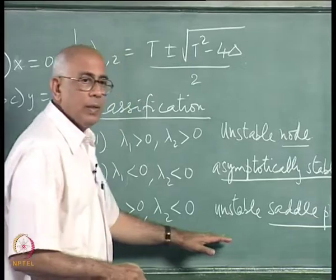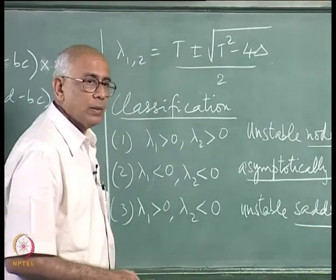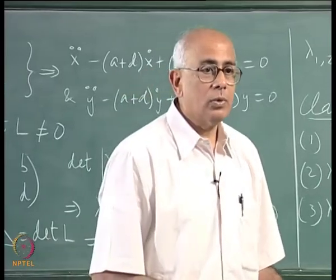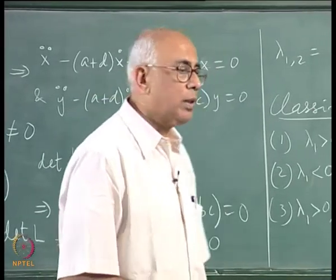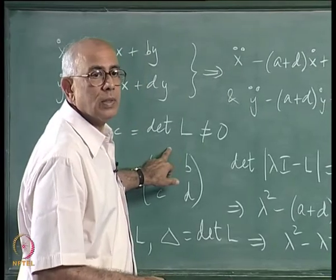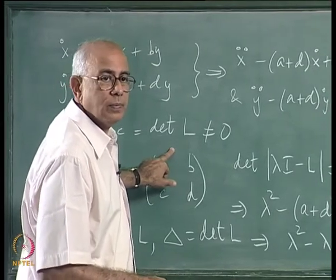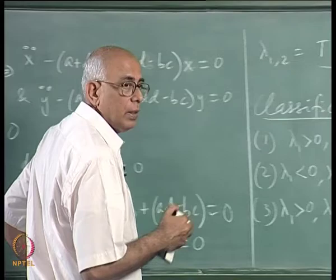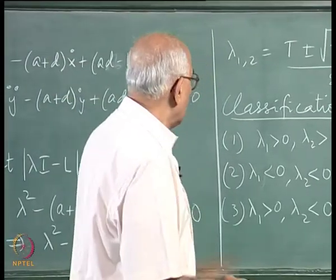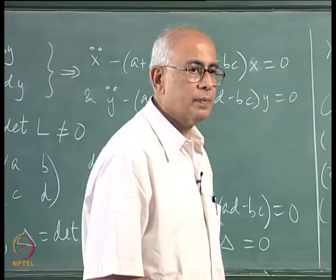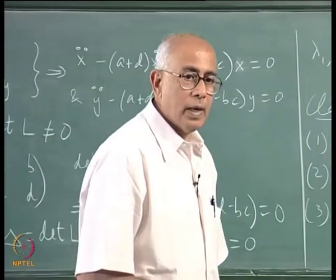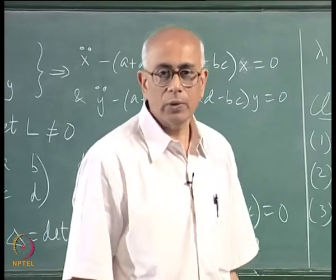We have the third possibility: a saddle point. We have ignored the case where one or both eigenvalues can be 0, since we assumed the matrix is non-singular, so it cannot have 0 as an eigenvalue — that case must be treated separately. What other possibilities exist? Complex eigenvalues.